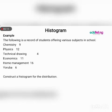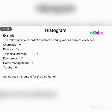Moving on, we will now look at histograms — they are almost similar. The only difference is that they do not have gaps in between them. We have an example: the following is a record of students offering various subjects in school. Chemistry — 9 students; Physics — 12 students; Technical Drawing — 4 students; Economics — 11; Home Management — 16; Yoruba — 6.